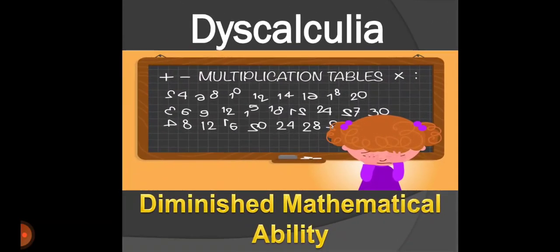Next, we have dyscalculia. Here, this difficulty is diminished mathematical ability. That means, even simple calculations are done incorrectly and very slowly by the learners with this disability. The children fail to understand the sequence or the steps or the directions for solving these mathematical problems. They face difficulty in learning multiplication tables, symbols and other such concepts.